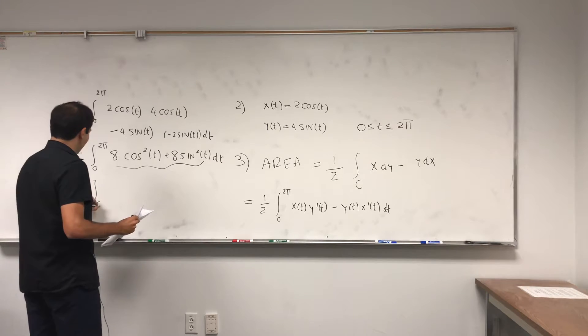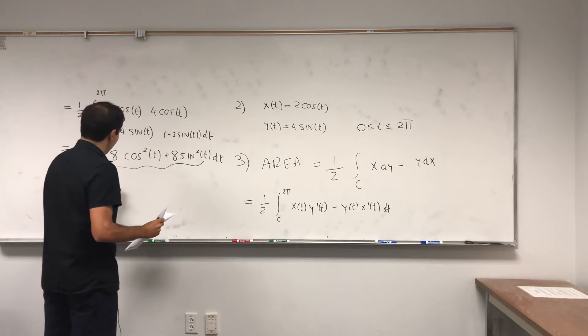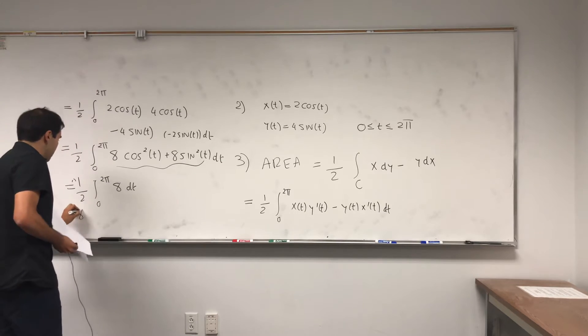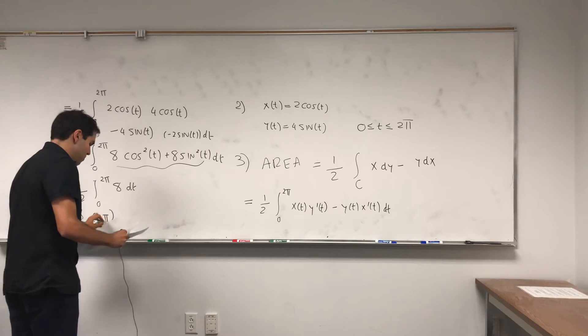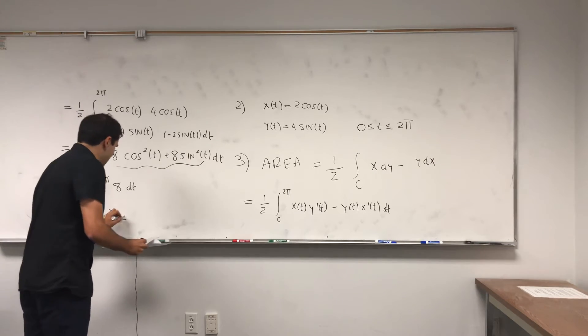So one half times the integral from zero to two pi of eight dt. And so that's eight over two times two pi, and we get eight pi.